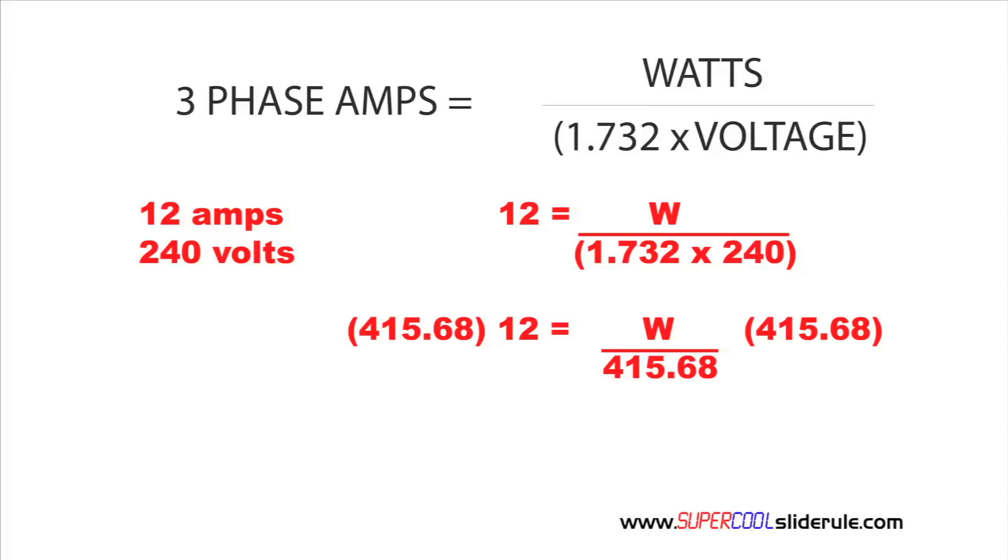Now, when we multiply by 415.68 and divide by 415.68, they cancel each other out. So, we are done on that side. We end up with 4,988 are equal to the watts. Now, 4,988, just round that up to 5,000 watts.